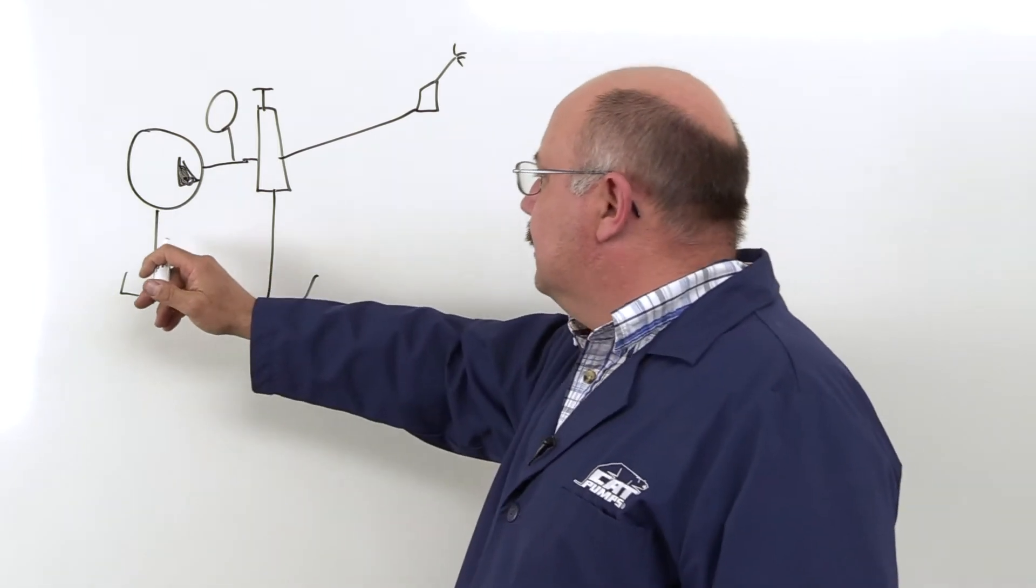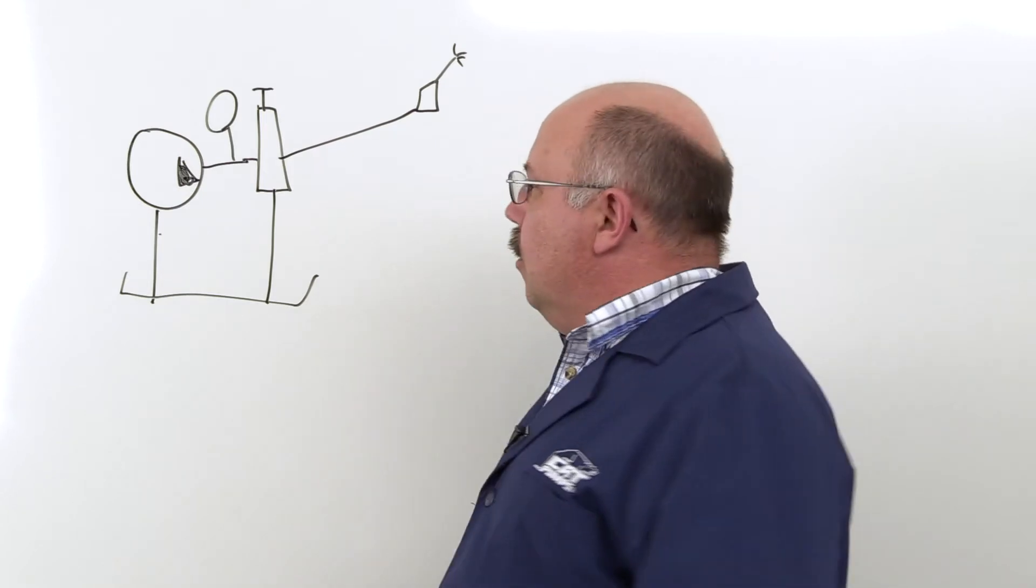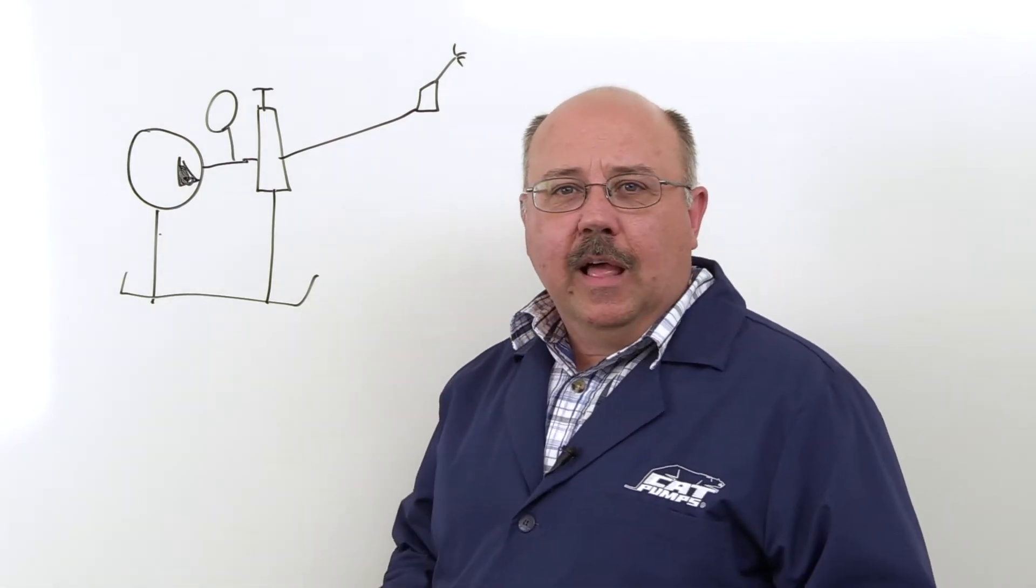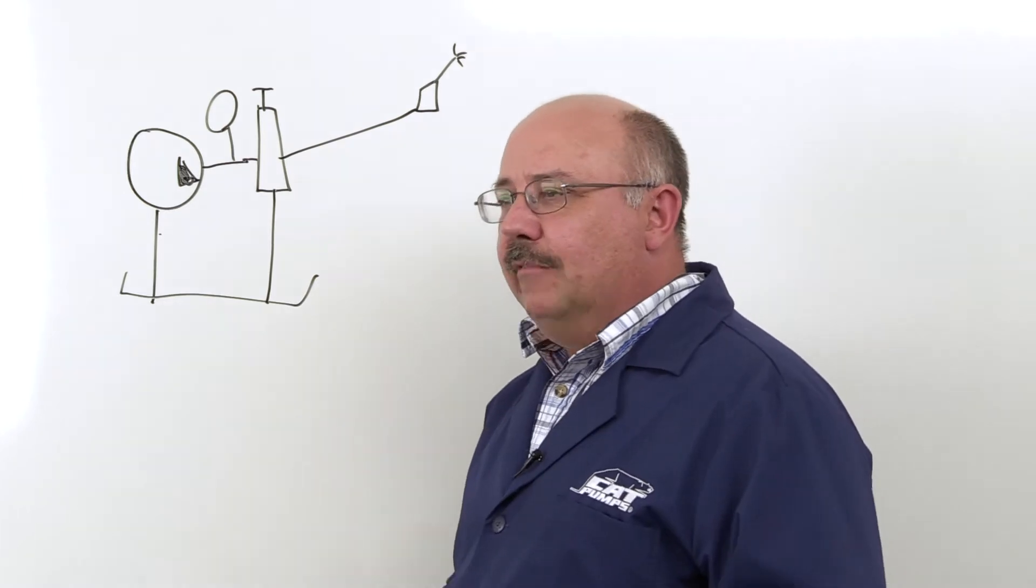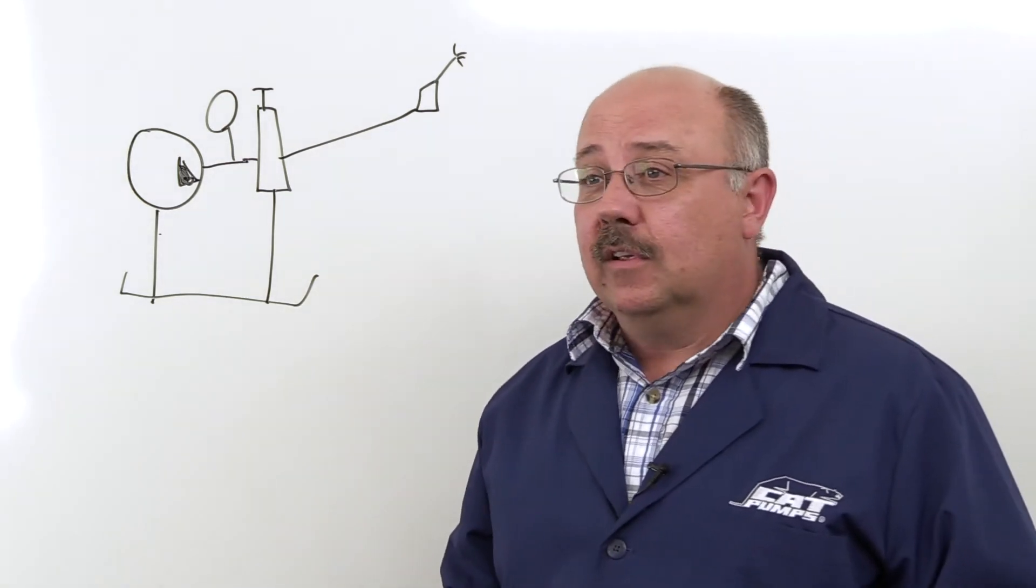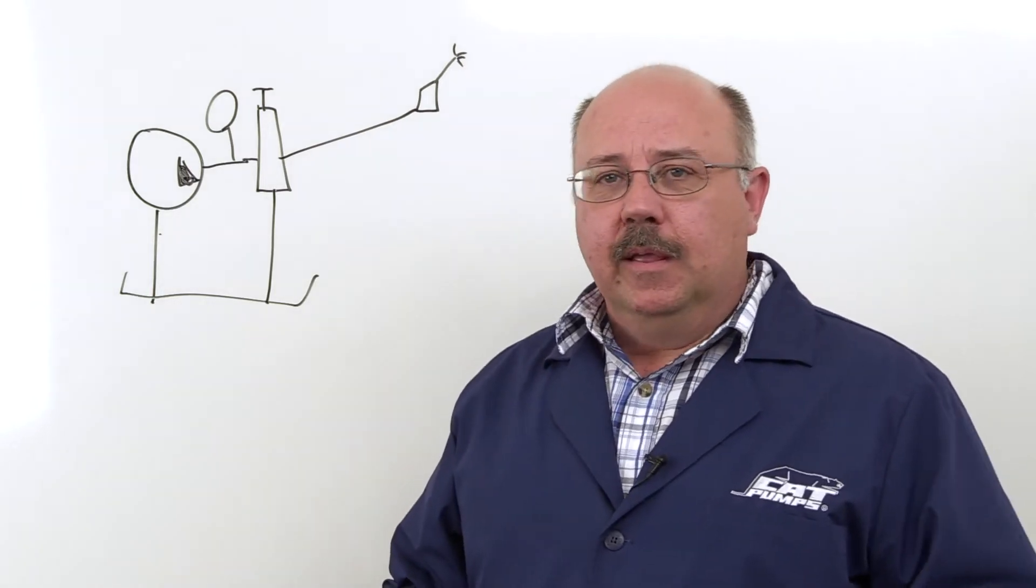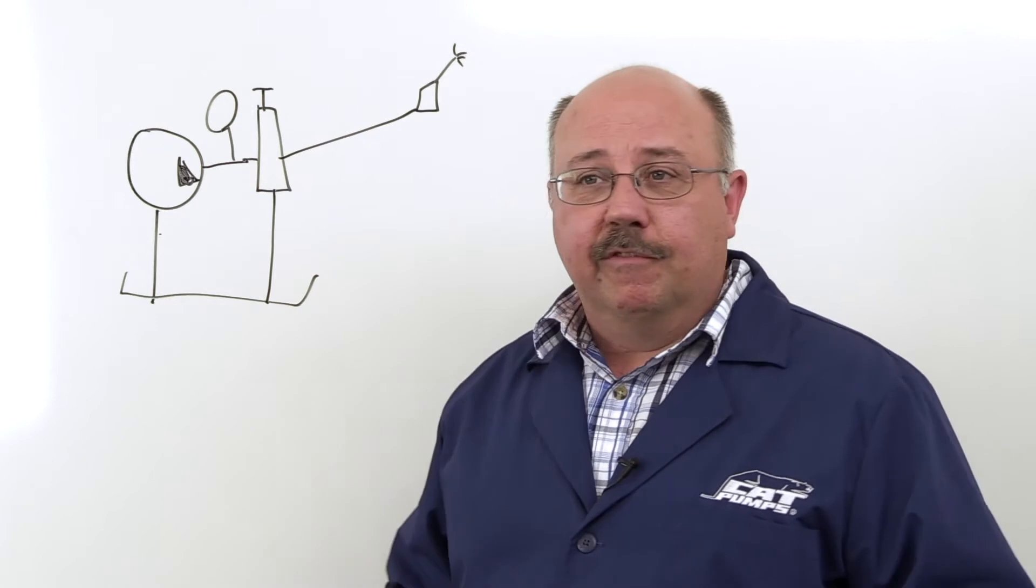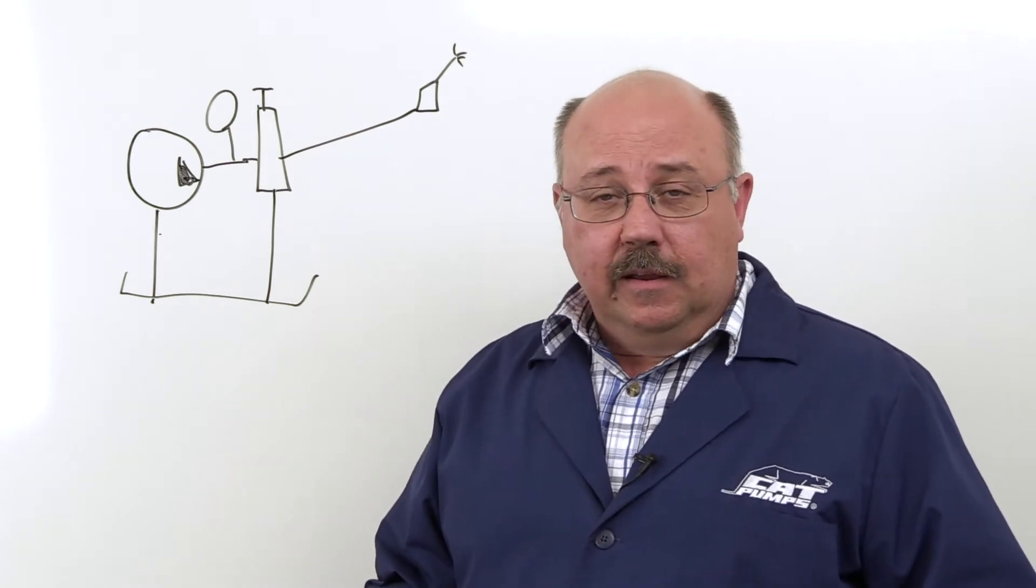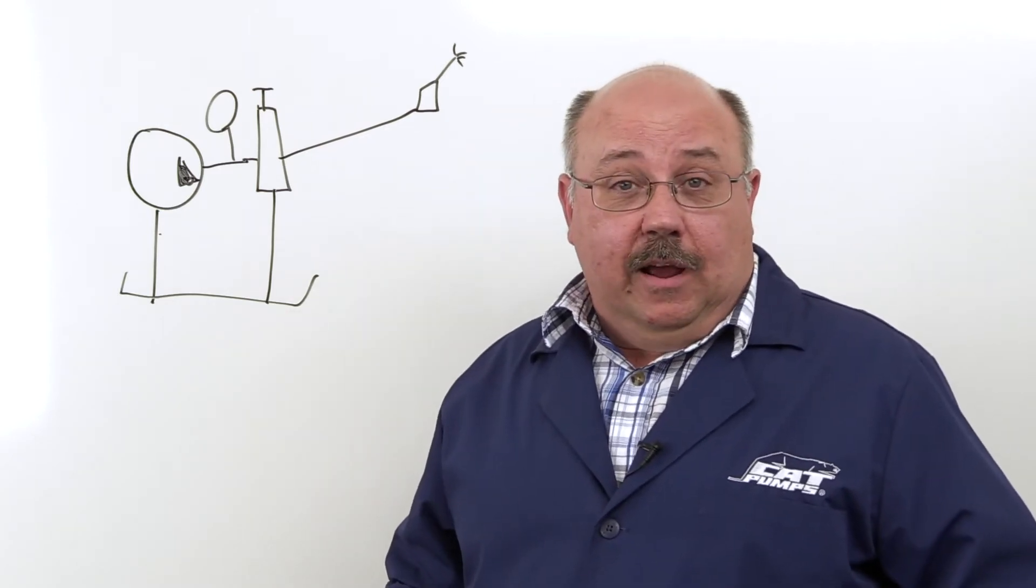But how do we know what line size to put for the inlet? Let's start with an inlet line size. We know that, and we've learned over time, that if your inlet line velocity can be four feet per second or less, it's got a very laminar flow going into the pump, and the pump will run very well with a four feet per second inlet velocity.